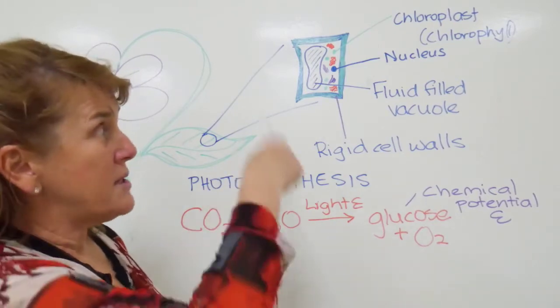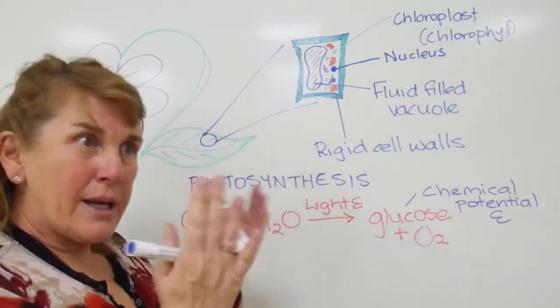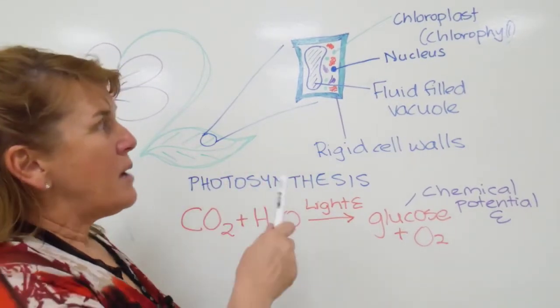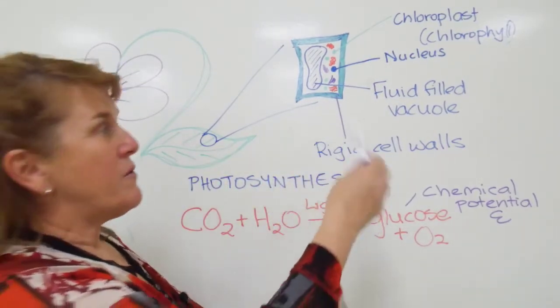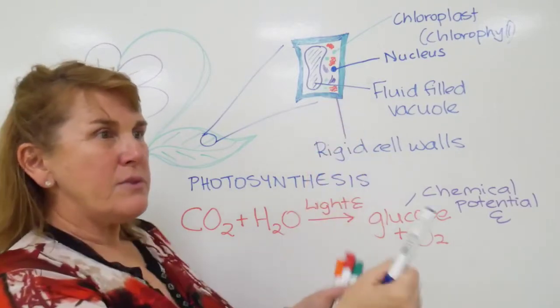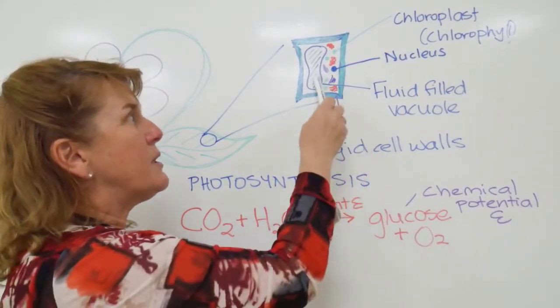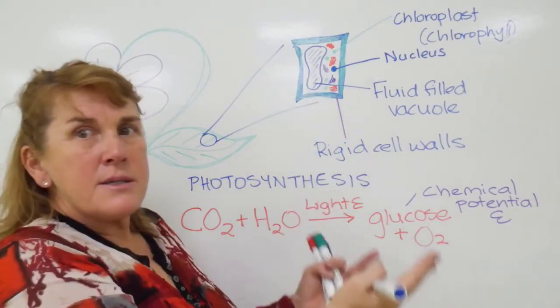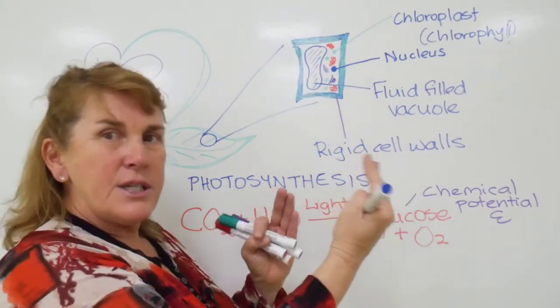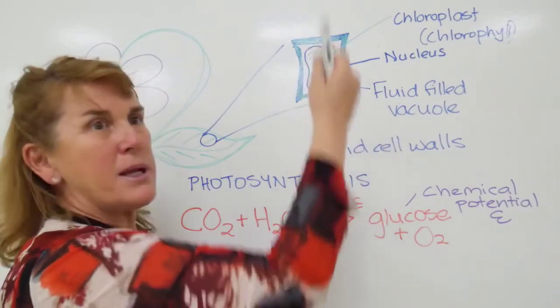So what happens is there's a combination of things here where the rigid cell walls generally hold the cell quite stiffly and then filling the vacuole makes the cell turgid, that is makes it rigid because it's filled with water and the plant stands upright.